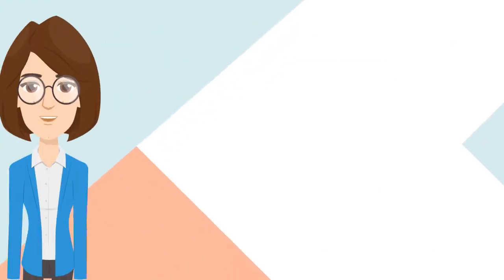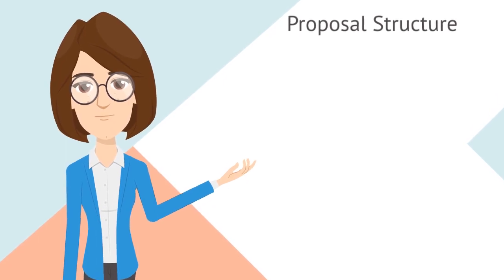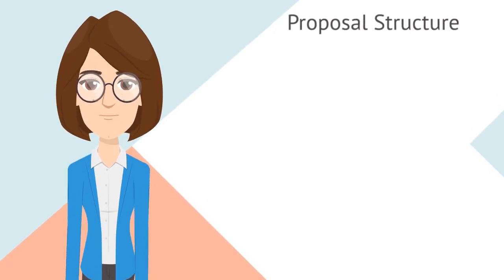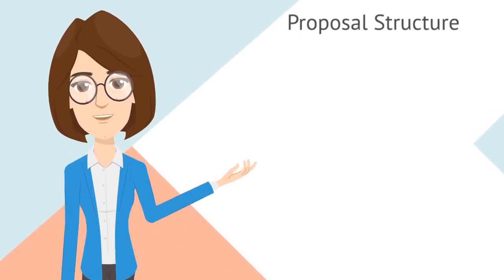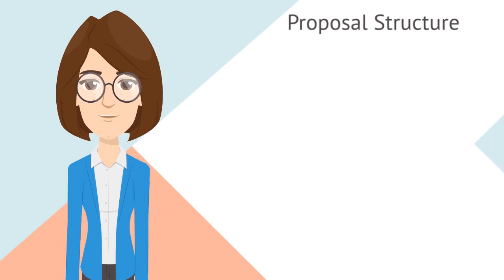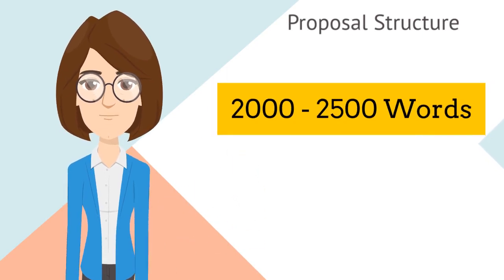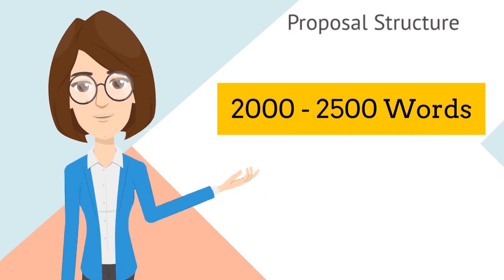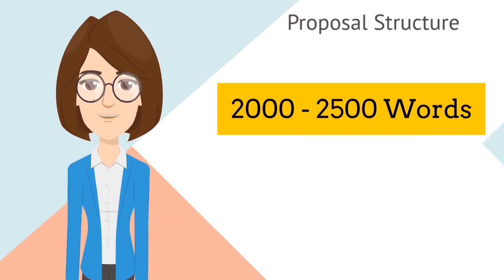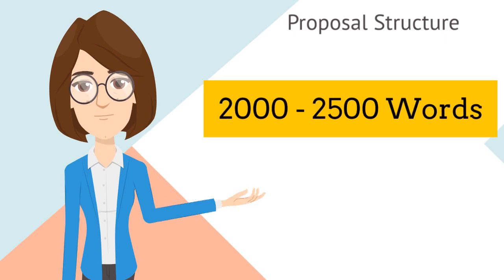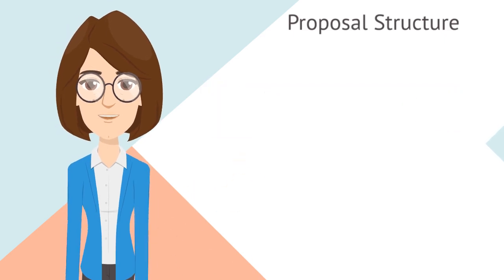Let's start with proposal structure. The structure of the proposal includes 8 different sections and is approximately 2000 to 2500 words. It should never be too short and also should not be too long. It includes the following sections.